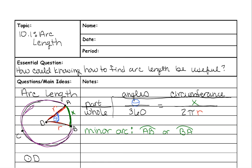Major arcs are always named using three letters. Because if you just named it AB you would probably go the short way around. So you always name it using three.